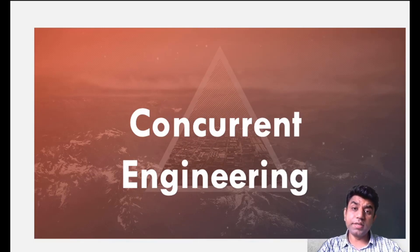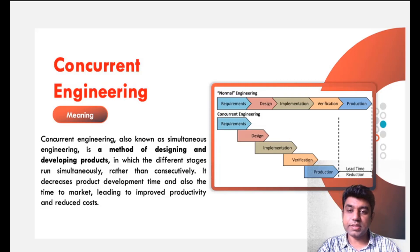Concurrent engineering is a kind of philosophy which is implemented into the manufacturing process. But what do you understand by this word concurrent? Let us get started with it. Basically, concurrent means things which are working simultaneously. First of all, we are having a requirement.